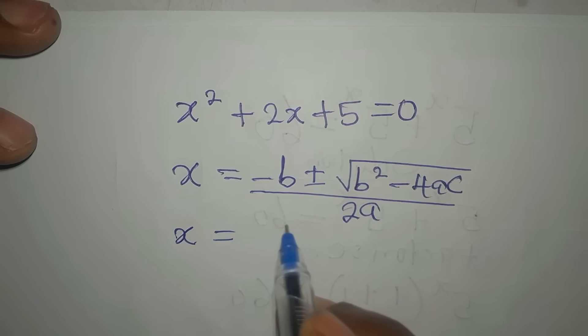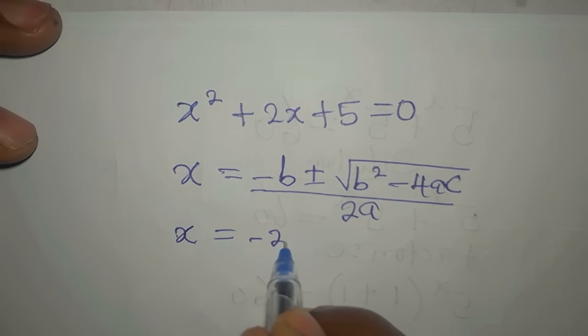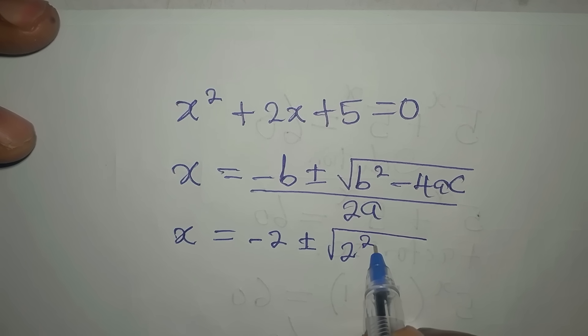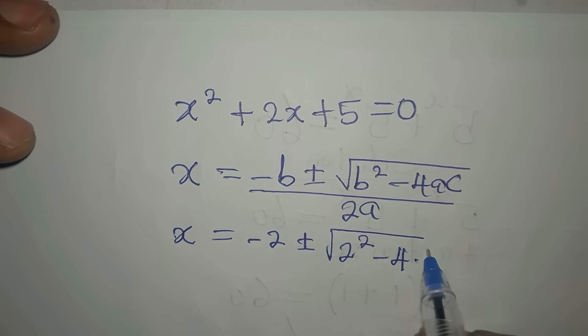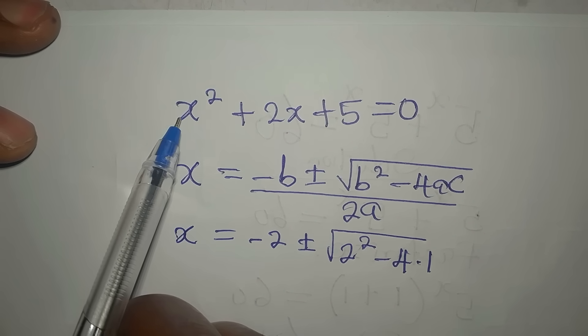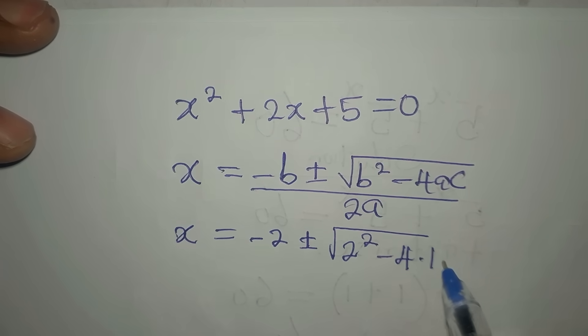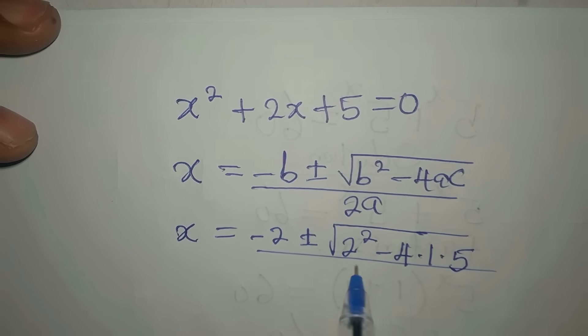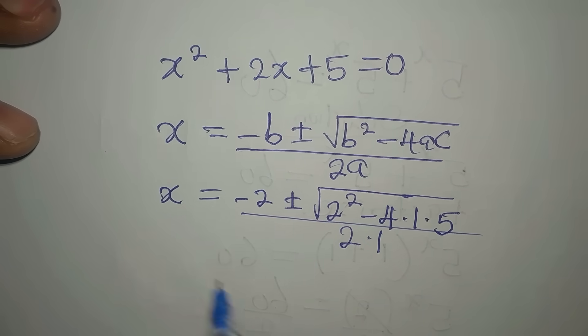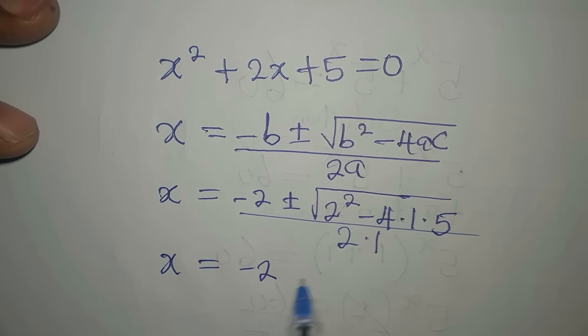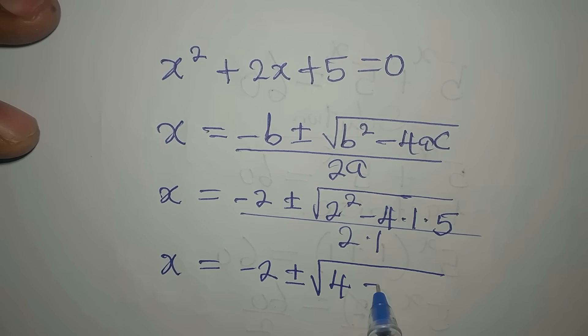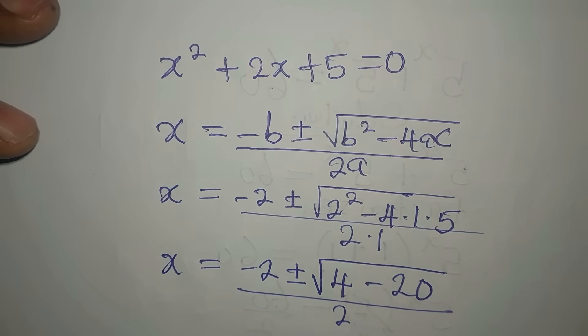So our x will now be, in place of minus b, we'll write minus 2 because b is 2, plus or minus, we have 2 squared over here, minus 4 times 1 times 5, we'll now divide this by 2 times 1. So our x will now be minus 2 plus or minus, we'll have 2 squared that is 4, then minus 20, as we divide this by 2, because 2 times 1 is 2.